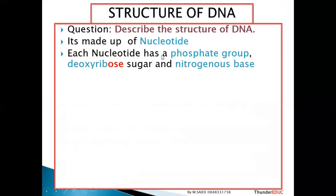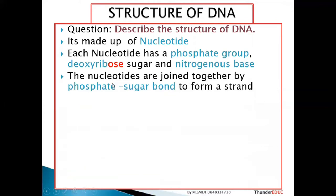Each DNA is made up of nucleotides. Each nucleotide is made up of a phosphate group, a deoxyribose sugar — because this is DNA, not RNA; if it were RNA you would say ribose sugar, so be specific and say deoxyribose — and nitrogenous bases. The nucleotides are joined together by sugar-phosphate bonds to form a strand.